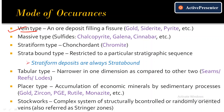Examples of vein type ores include gold and iron ores. Gold can occur as vein type, and can also occur in other modes — one type of ore can occur in different modes. Siderite and pyrite, which are iron ores, can also occur as vein type deposits.